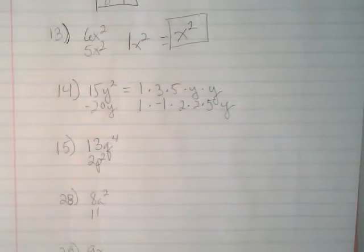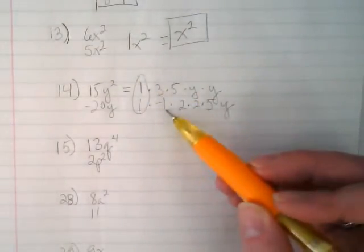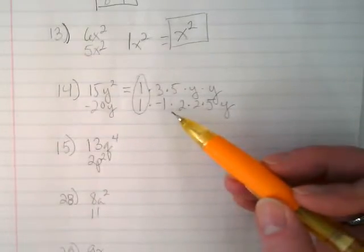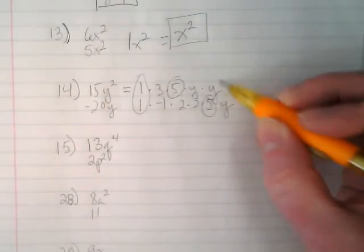I wrote negative 1 first, it doesn't matter. I just put them under there so I can circle them easier. They have this in common, but only this one has the negative 1, so it's not a common factor. And then I'm looking, we've got 5 here and 5 here and y.